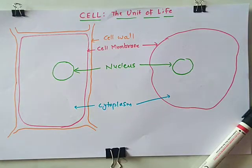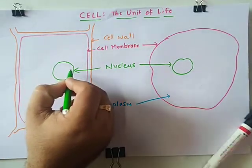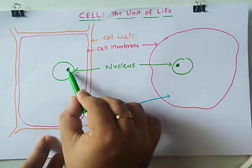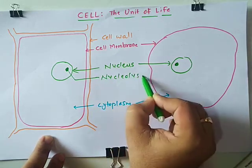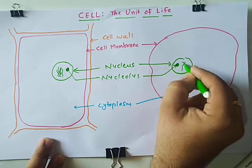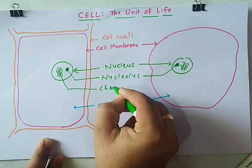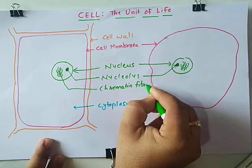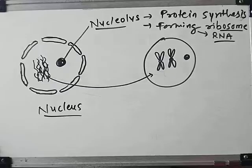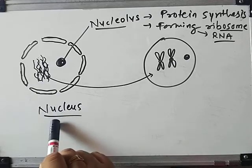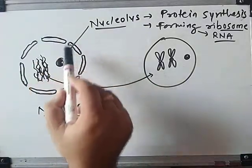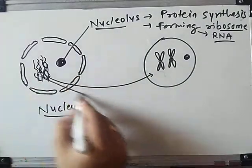Now focusing on the main part — the brain of the cell — that is the nucleus. In the diagram, you can draw another structure inside the nucleus named nucleolus, and a thread-like structure available throughout the nucleus named chromatin fiber. The nucleus contains: the nuclear membrane with nuclear pores, internally the nucleolus, and the chromatin fiber.